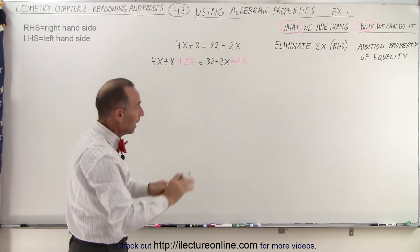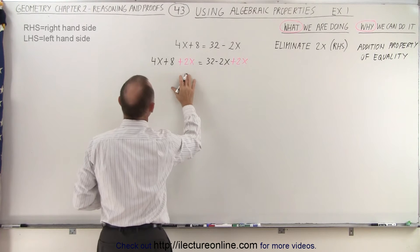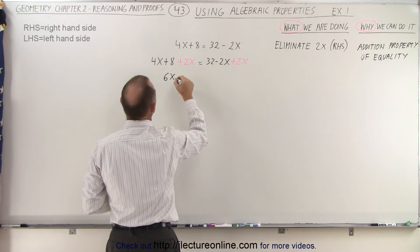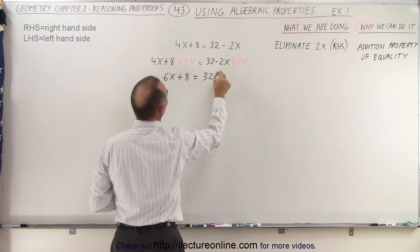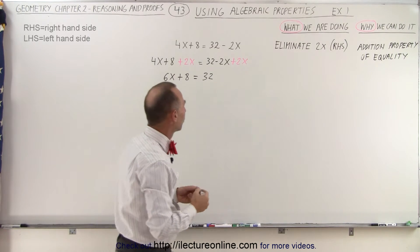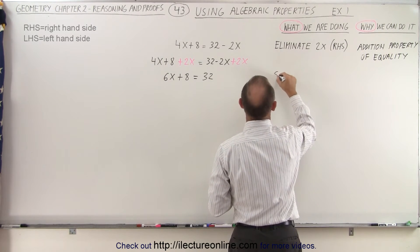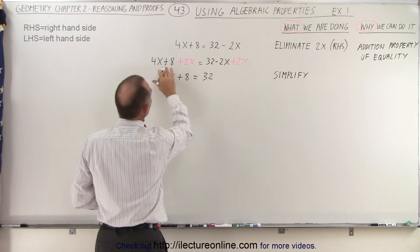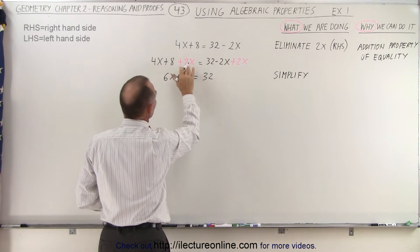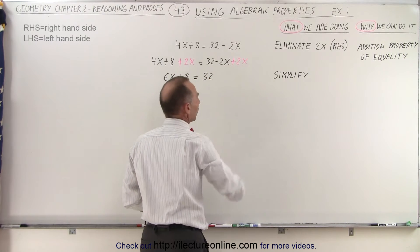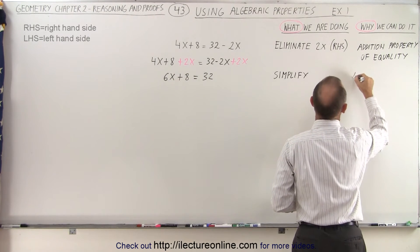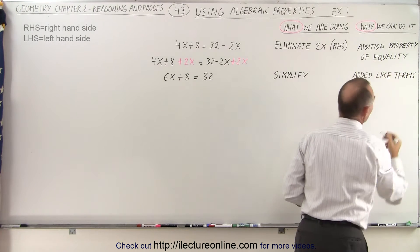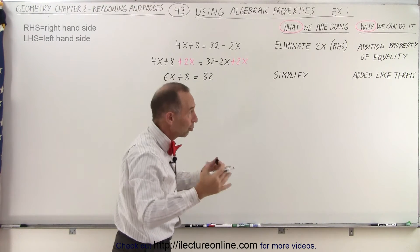Nothing has changed — things are still exactly the same because I used a property I can trust: I add the same thing to both sides and nothing has changed. When I simplify, I add 4x plus 2x, which gives me 6x on the left side, plus 8 equals 32. The minus 2x and plus 2x cancel. I can do that because I added like terms.